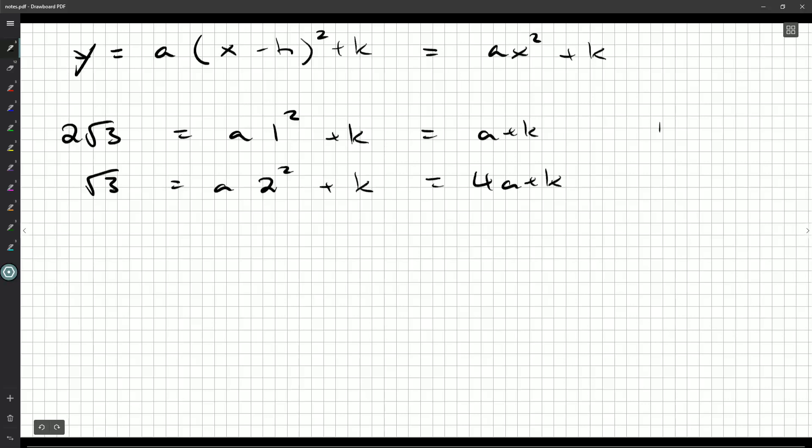Now, if I double this second one, we might want to number our equations, especially if we're writing things up nice and neat. Oh, actually, no, I don't need to double them up. I could just do 1 minus 2 and that'll get rid of the k's. So 2√3 minus √3 is √3. a minus 4a is -3a. And k minus k is nothing. And this allows me to then solve for a. a is √3 over -3. And that'll be -1 over √3. So now I know a.